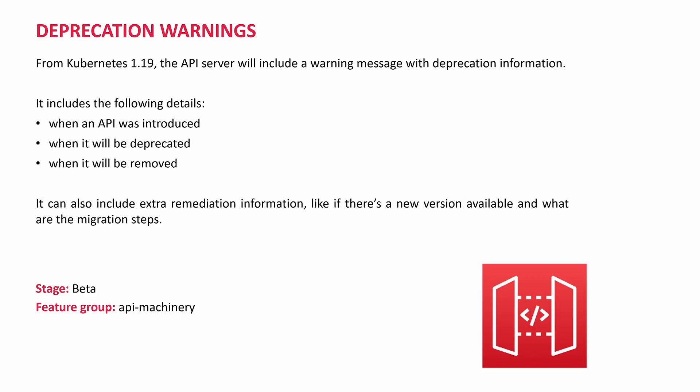Next, we look into some beta features. Deprecation warnings — it's a very good feature in 1.19. When an API gets deprecated, it keeps sending a message to administrators and developers with the following details: when the API was introduced, when it will be deprecated, and when it will be removed. It can also include extra remediation information, like if a new version is available and what the migration steps are. It is the motivation from the no permanent beta concept. Feature group: API Machinery. Stage: beta.